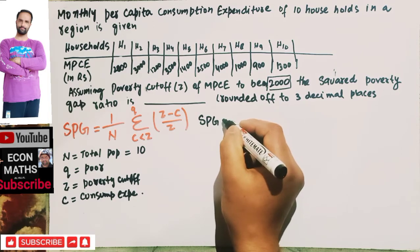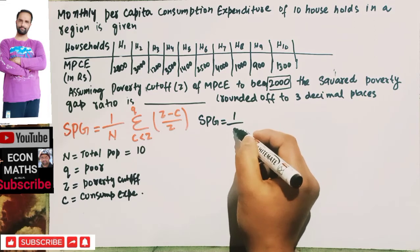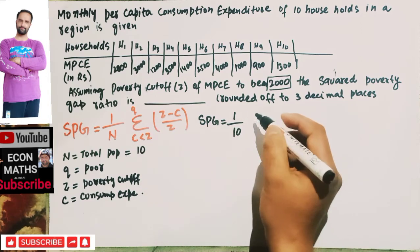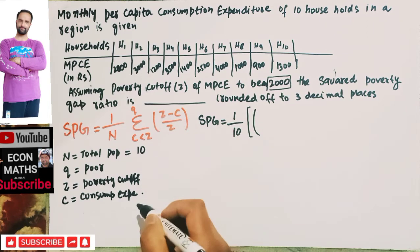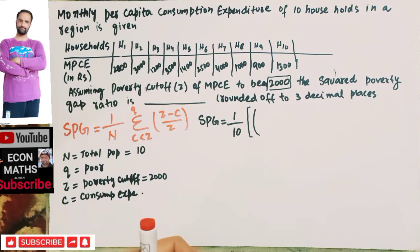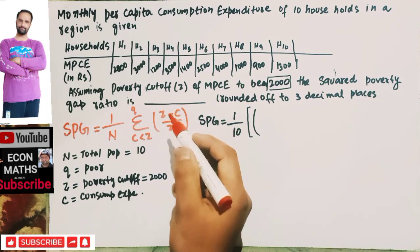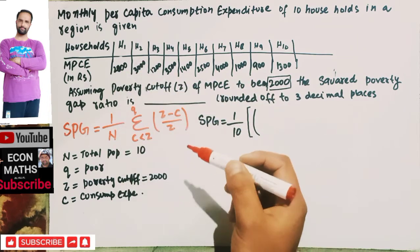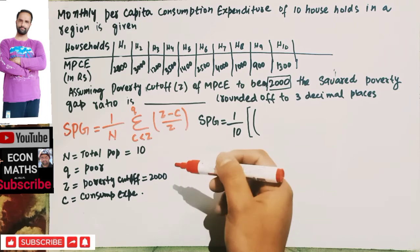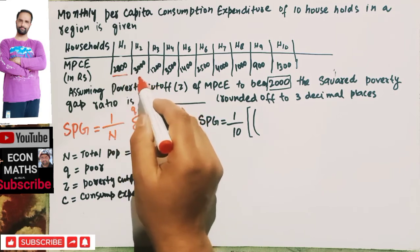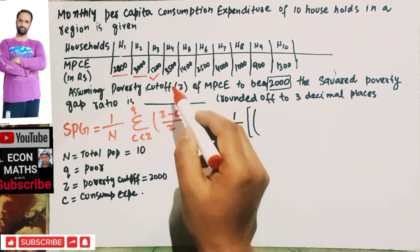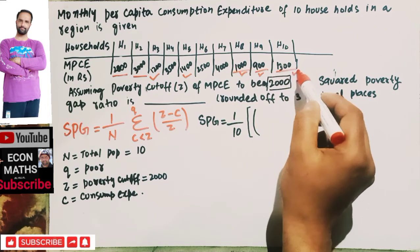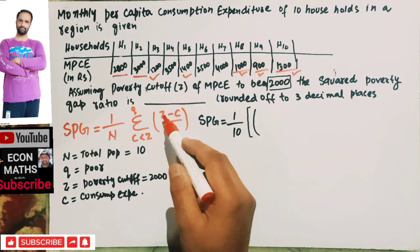The squared poverty gap equals (1/n), which is (1/10), times the summation over those with c less than z. Here z equals 2000. The poor are those whose monthly per capita consumption expenditure is less than 2000. From the data, the values below 2000 are: 1200, 1400, 1000, 900, and 1300. These are our values of c.